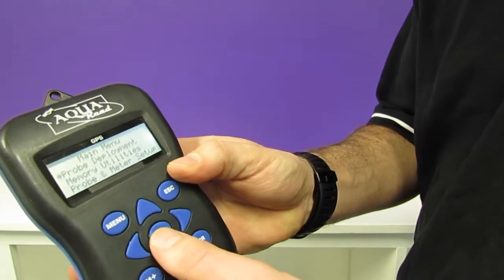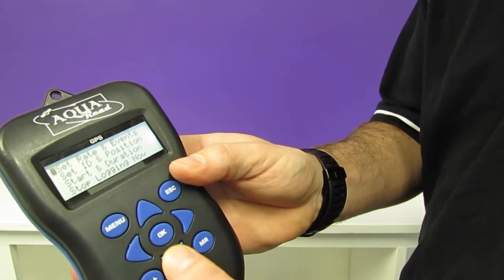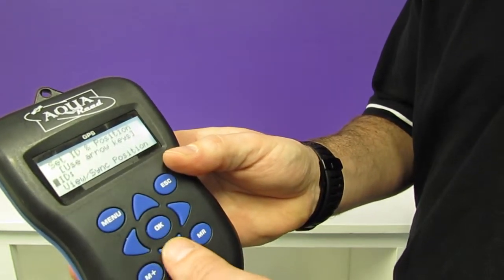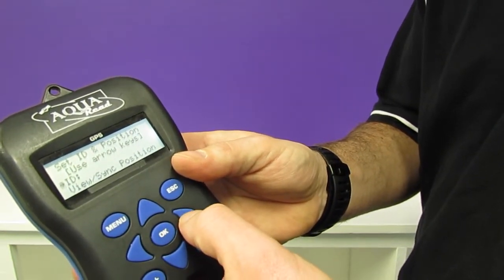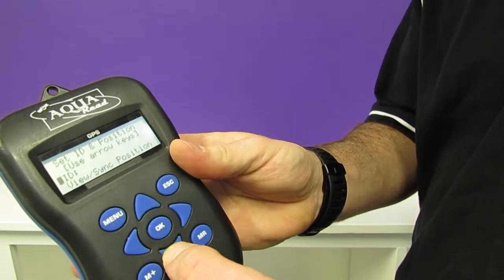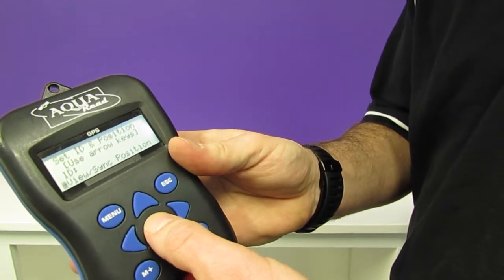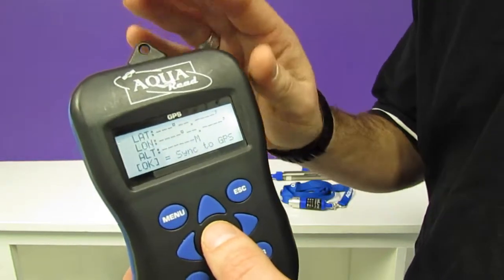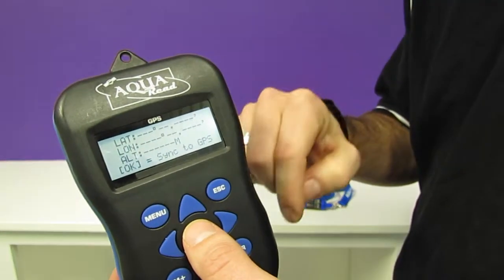To do this we enter the menu, we go to probe deployment and we go to set ID and position. Set ID allows us to type in a name of the location. Pressing the view and sync position will allow us to sync the GPS coordinates that have been recorded by the meter and embed them into the probe.